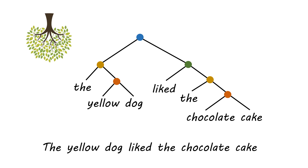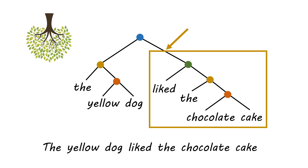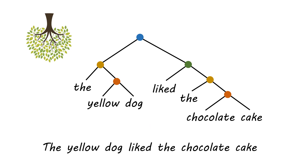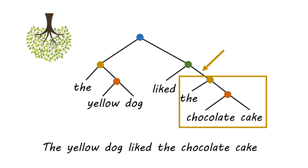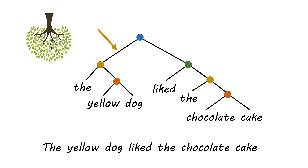If you're presented with a tree structure for a sentence and you didn't yourself do the analysis of what is a constituent, you can see the constituents within the structure because all you have to do is imagine you're chopping off a branch of the tree. Anything that we would chop off by making one cut - that chunk right there is a constituent. So we could try making cuts in different places and we'll get different constituents. That's how you identify constituents in a syntactic tree that you're given.